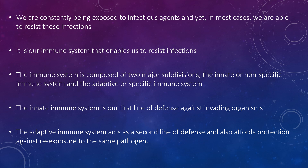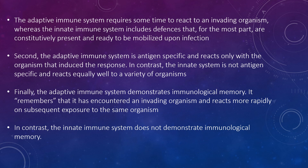We are constantly being exposed to infectious agents, and yet in most cases we will be able to resist these infections. It is our immune system that enables us to resist infections. The immune system is composed of two major subdivisions: the innate or nonspecific immune system and the adaptive or specific immune system. The innate immune system is our first line of defence against invading organisms, and the adaptive immune system acts as our second line of defence. The adaptive immune system requires some time to react, whereas the innate immune system includes defences that are constitutively present and readily mobilised upon infection.